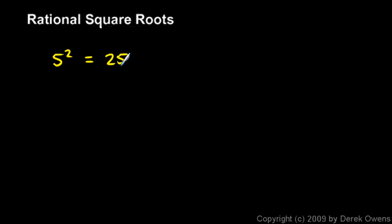So since 5 squared is 25, that means the square root of 25 is 5. So square rooting is the inverse of squaring.